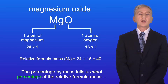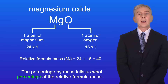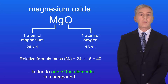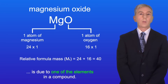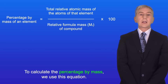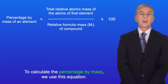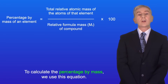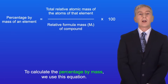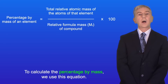The percentage by mass tells us what percentage of the relative formula mass is due to one of the elements in a compound. To calculate the percentage by mass we use this equation: the percentage by mass of an element equals the total relative atomic mass of the atoms of that element, divided by the relative formula mass of the compound, and then multiplied by 100.